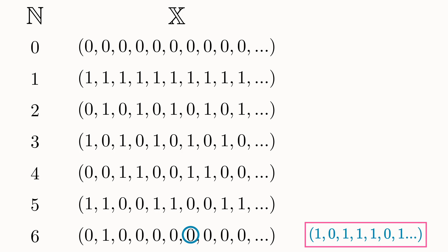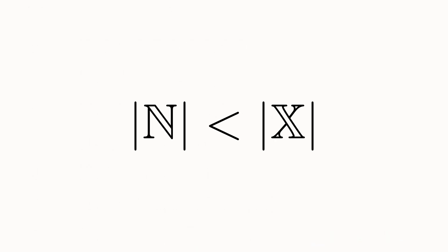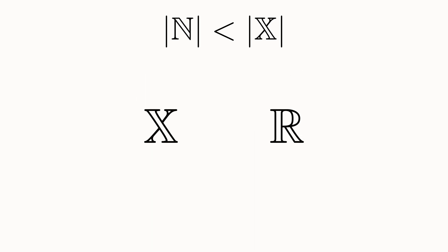So there must be more binary sequences than there are natural numbers. Not all infinities are equal. Cantor called these two infinities countable infinity and uncountable infinity. And since there exists a bijection between the real numbers and the set X, Cantor's proof showed that the set of real numbers is uncountable as well.